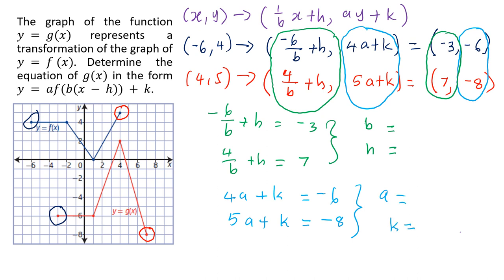There are many methods to solve these simultaneous equations. Solving them gives a = -2, k = 2, b = 1, and h = 3. With all four values known, we can write g(x) = -2·f(x - 3) + 2.